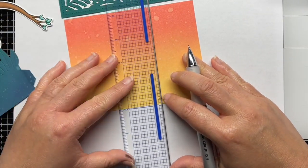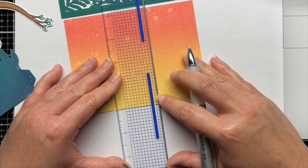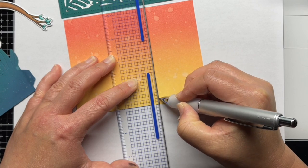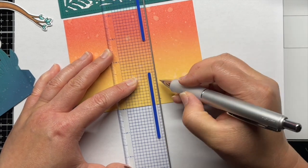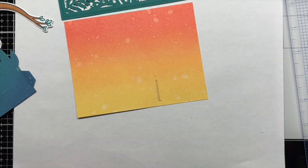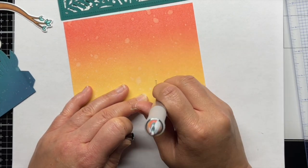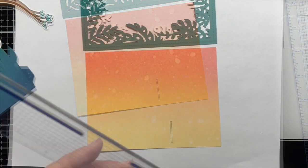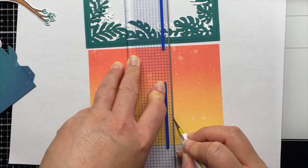Then I use a pencil and my ruler to connect the lines. I move my ruler slightly and make a second line to create a super skinny rectangle. I erase the extra pencil marks and then use a craft knife to carefully cut out the skinny rectangle.